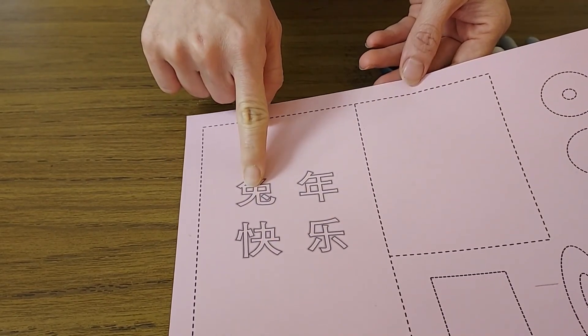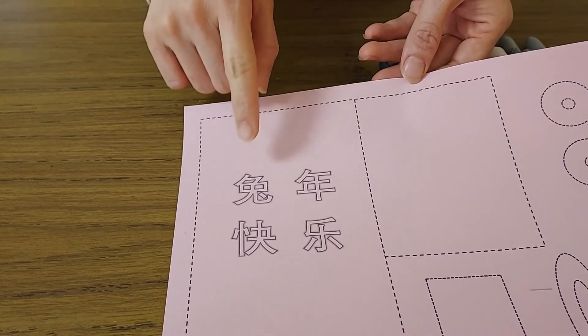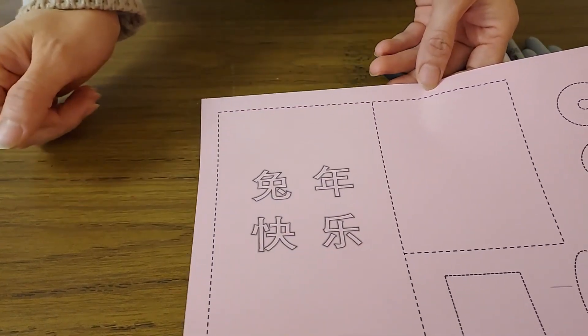Tù nián kuài lè. Tù, rabbit. Nián, year. Kuài lè, happy. Tù nián kuài lè. Let's get started.